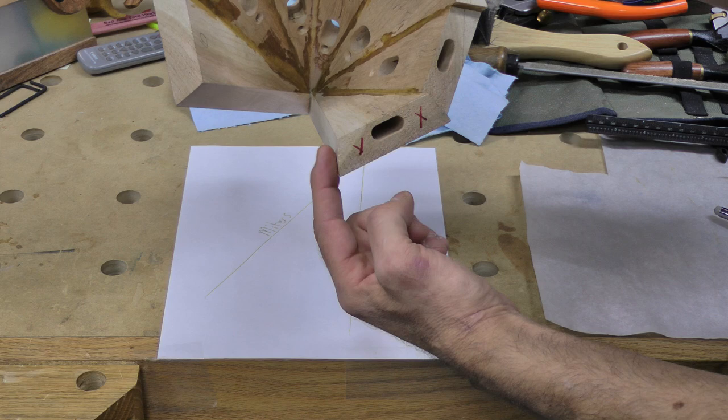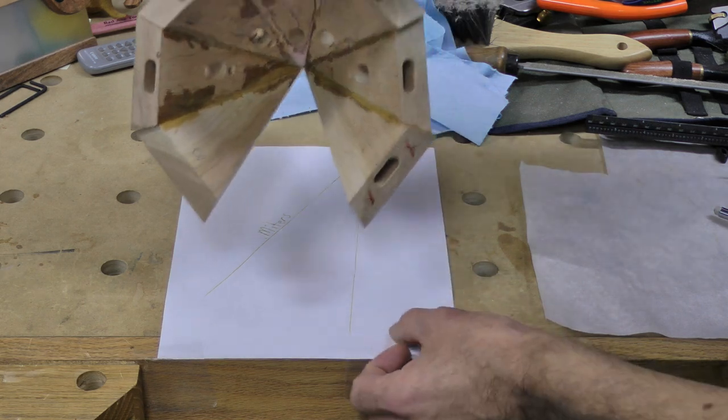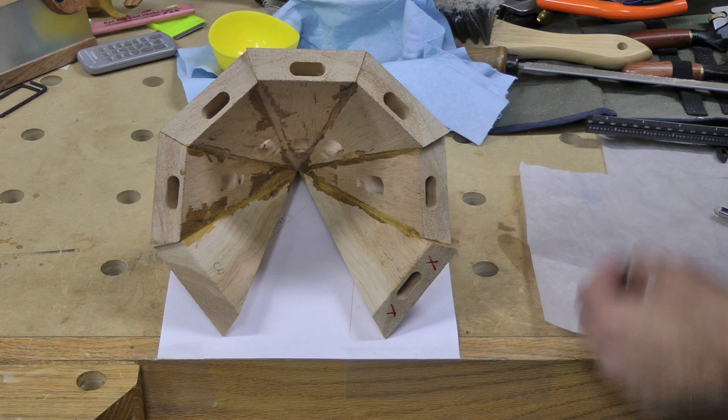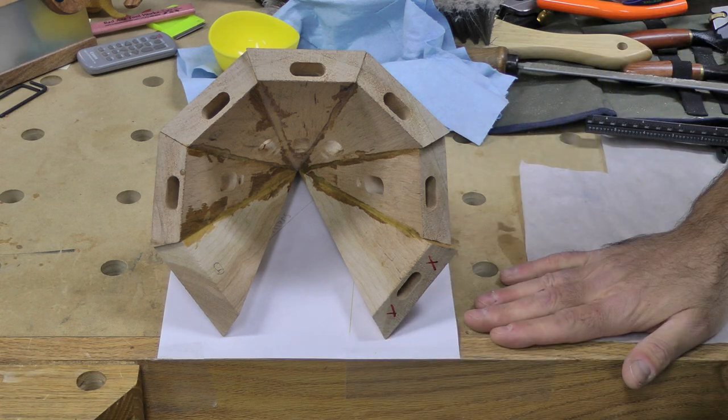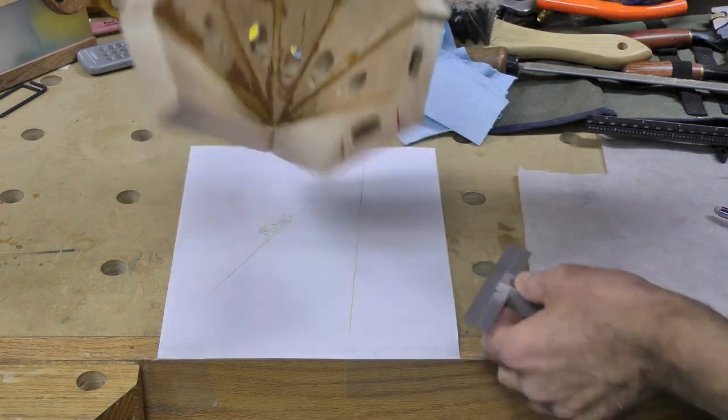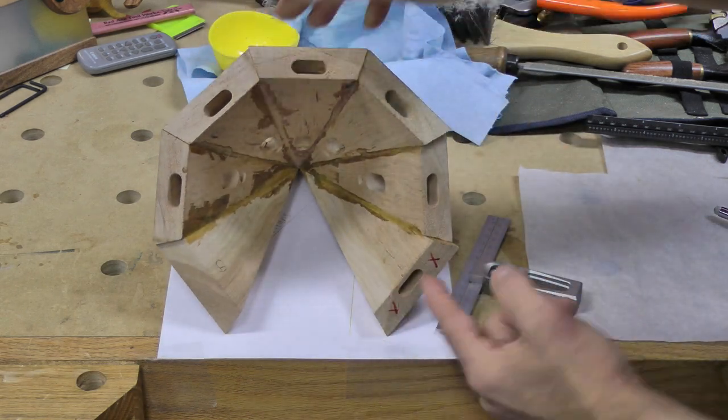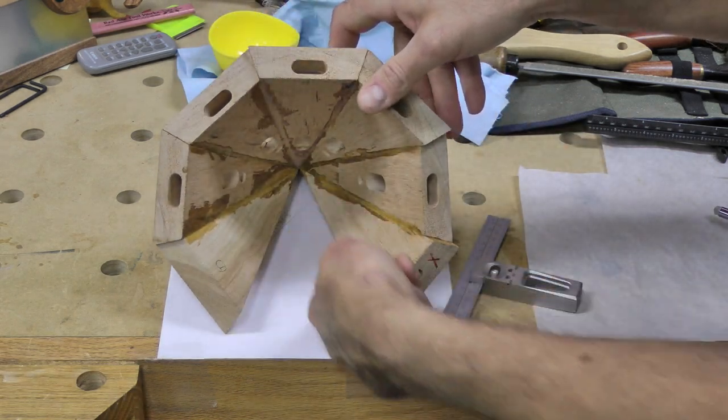So now we're going to figure out the bevel angle that we need to cut this for this match. So for that what I do is the surface of the bench acts as the plane, the plane of the circle of the triangle that we're trying to put here. This is the path that the blade is going to have to cut.